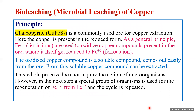Let us first discuss microbial leaching of copper. The ore we are studying is chalcopyrite, with chemical formula CuFeS₂, a commonly used ore for copper extraction. Here copper is present in reduced form. As a general principle, ferric ions are used to oxidize the copper compounds present in the ore.